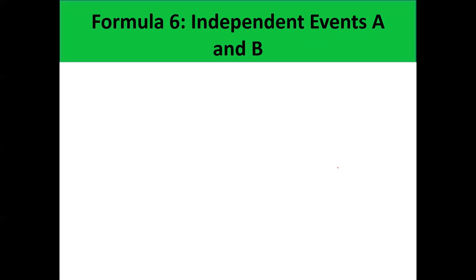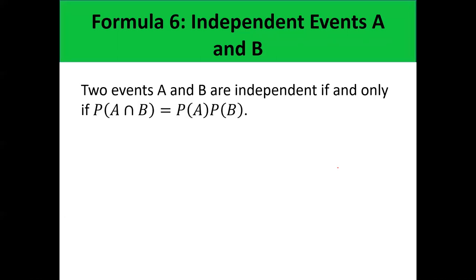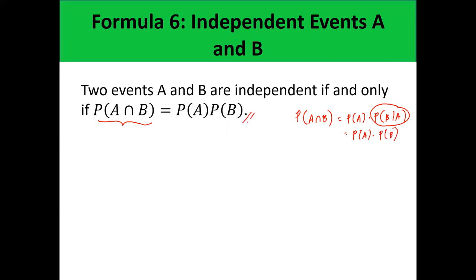The multiplicative rule formula for independent events states: if two events A and B are independent, then the probability of A intersection B equals the probability of A multiplied by the probability of B. This comes from the general multiplicative rule — P(A ∩ B) = P(A) × P(B|A) — but since A and B are independent, P(B|A) simplifies to P(B). So the probability of the intersection of two independent events is simply the product of their individual probabilities.